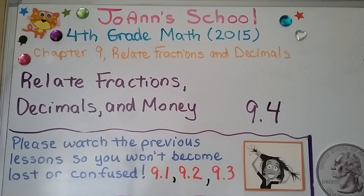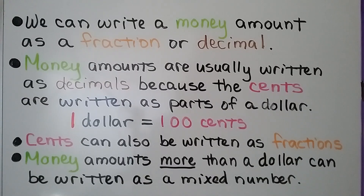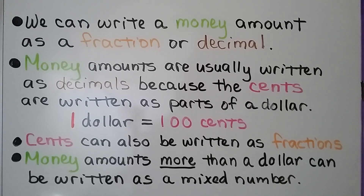We're at lesson 9.4 and we're going to relate fractions, decimals, and money. The previous videos for chapter 9 are linked in the description. We can write a money amount as a fraction or decimal. Money amounts are usually written as decimals because the cents are written as parts of a dollar. One dollar is equal to 100 cents. Cents can also be written as fractions, and money amounts more than a dollar can be written as a mixed number.